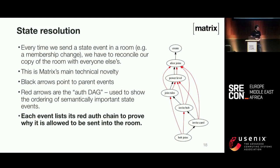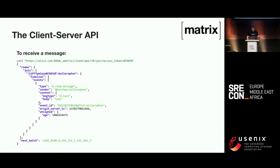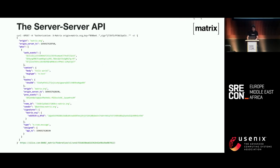Some guys at the University of Karlsruhe got very excited about this and wrote a bunch of papers on it. The server-server API — a real example grabbed from my home server — is relatively chunky: you have hashes of events as their IDs forming the auth structure, signatures put on by the server, and a bunch of other metadata. But in the end, it's basically just decorating 'hello world'.